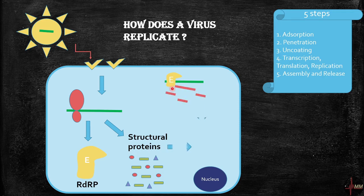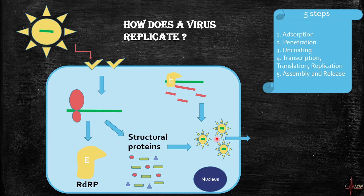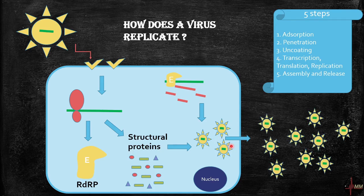Now the structural proteins and RNAs are assembled into a virus, and thousands and thousands of viruses are released from the human cell. In this process, the human cell may get damaged.